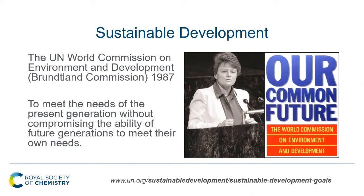Her name is Gro Brundtland. She was a Norwegian politician asked by the UN to develop its World Commission on Environment and Development, which published a report called 'Our Common Future' in 1987. In that report, she came up with the idea of sustainable development: development that meets the needs of the present generation without compromising the ability of future generations to meet their own needs. She also said something really important and often overlooked — that to achieve sustainable development, we need a collaboration between governments, industry, and what she called civil society, which simply means us operating as people.